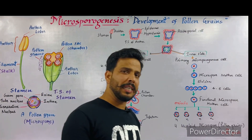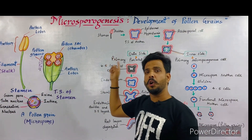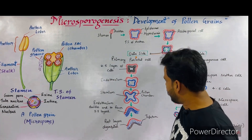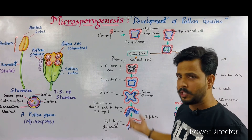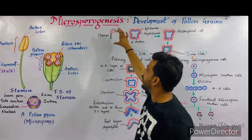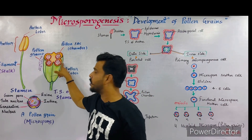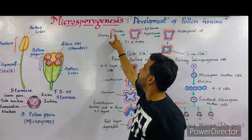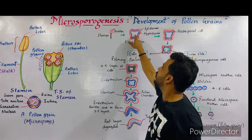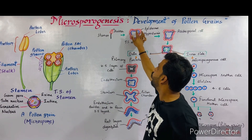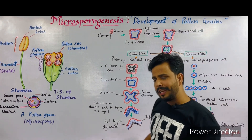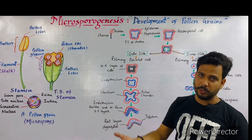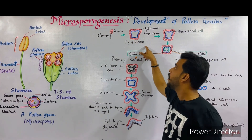Microsporogenesis is the process in which male gametes, pollen grains, or microspores are produced inside the pollen chamber. This is a young anther. In the mature anther, pollen chambers and pollen grains are produced, but in the young anther, if you see the TS, there are no pollen chambers and no pollen grains — only two layers are present.